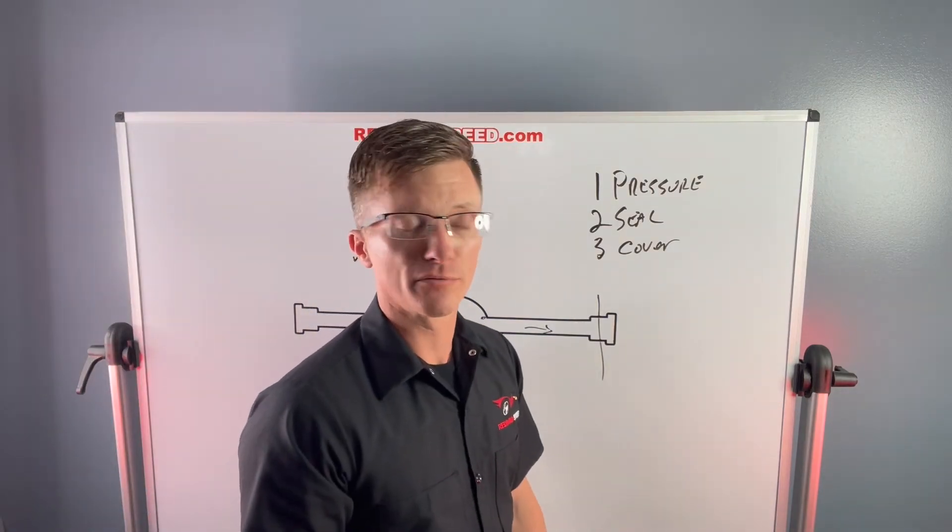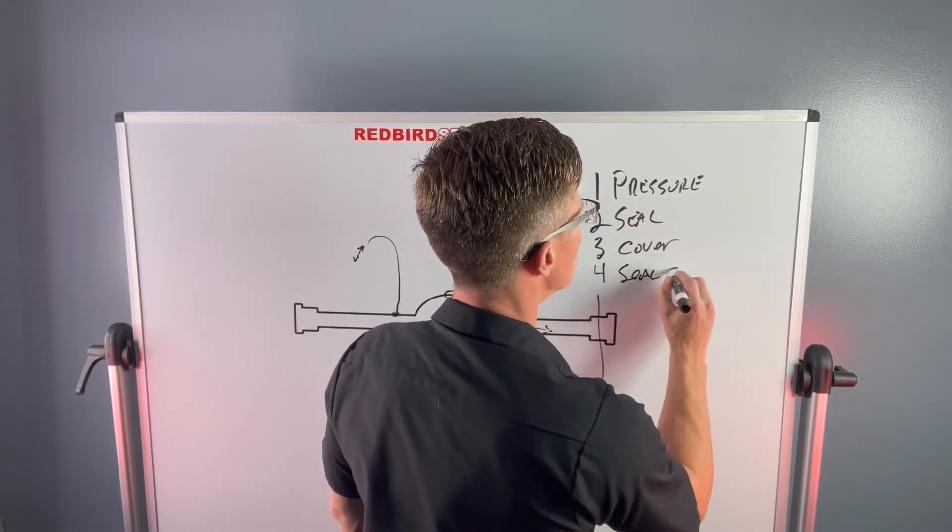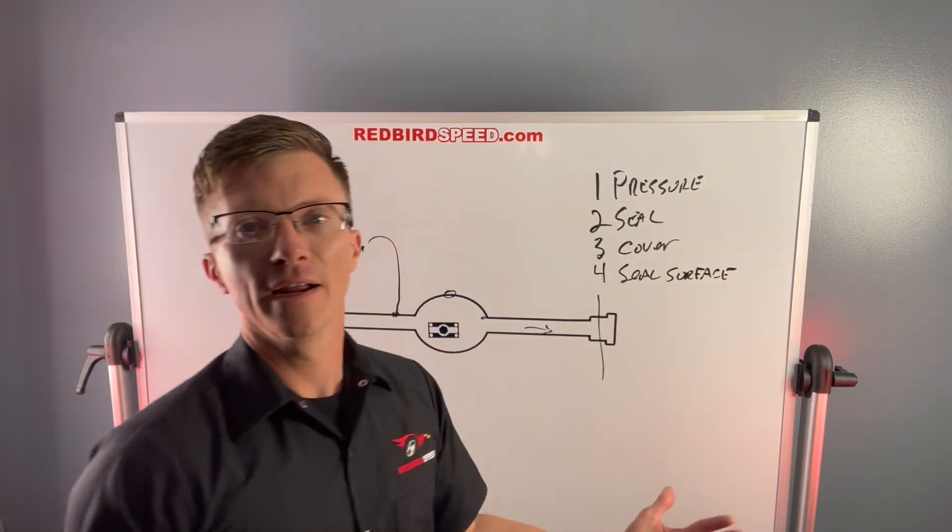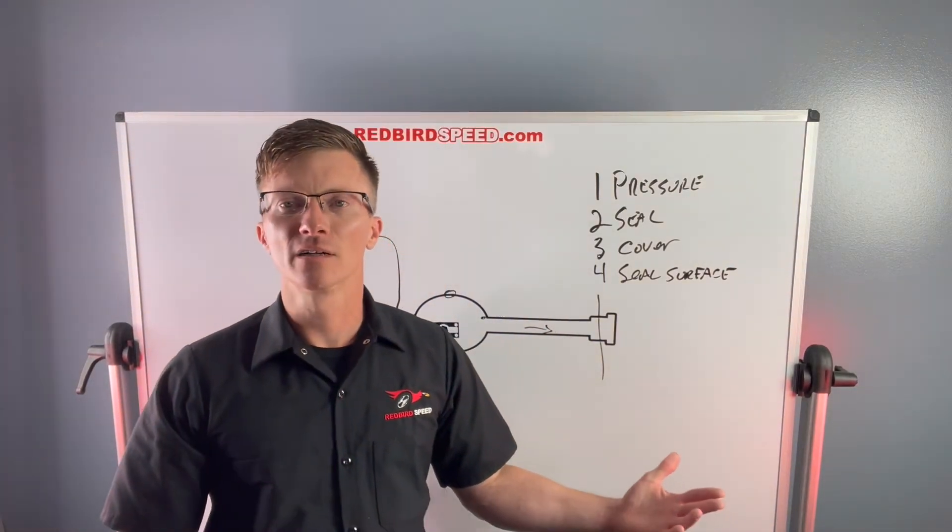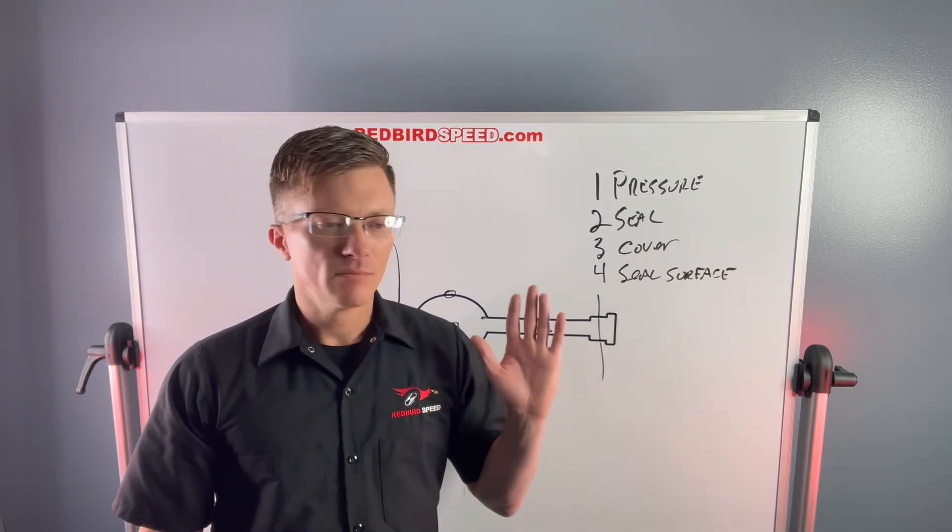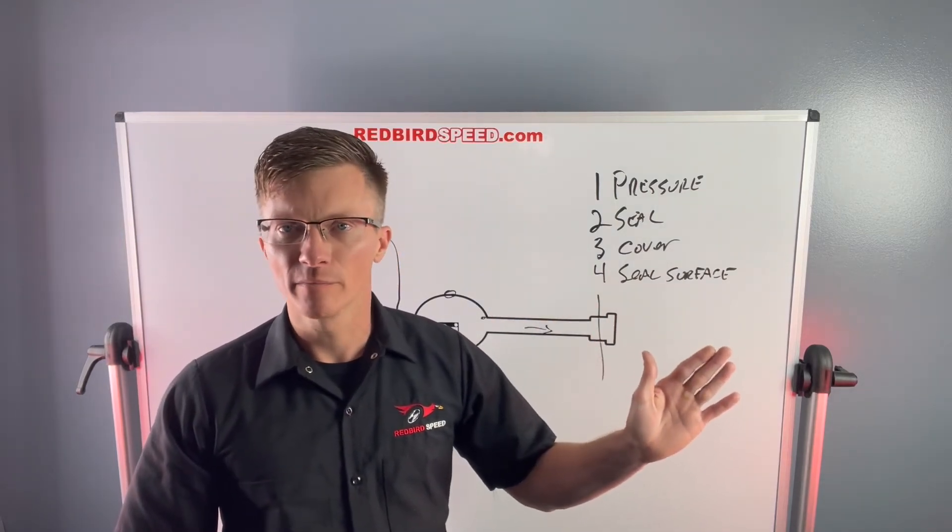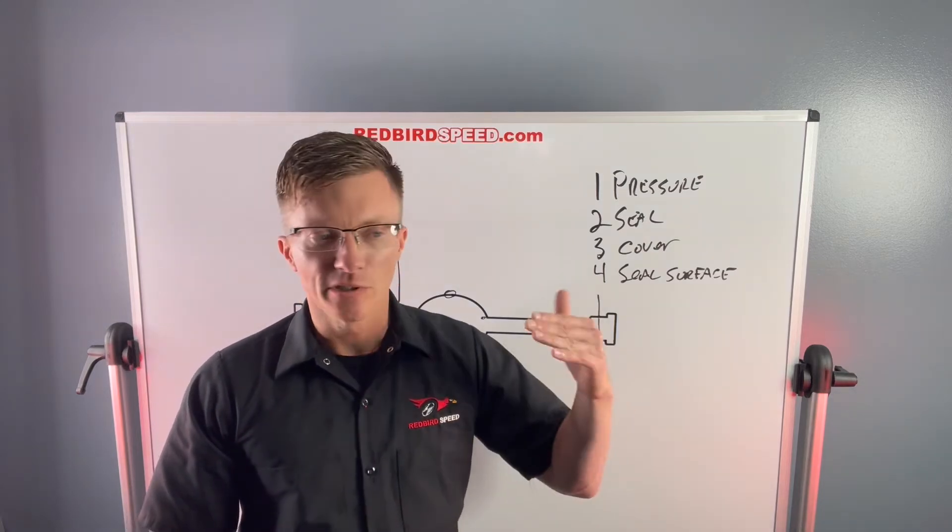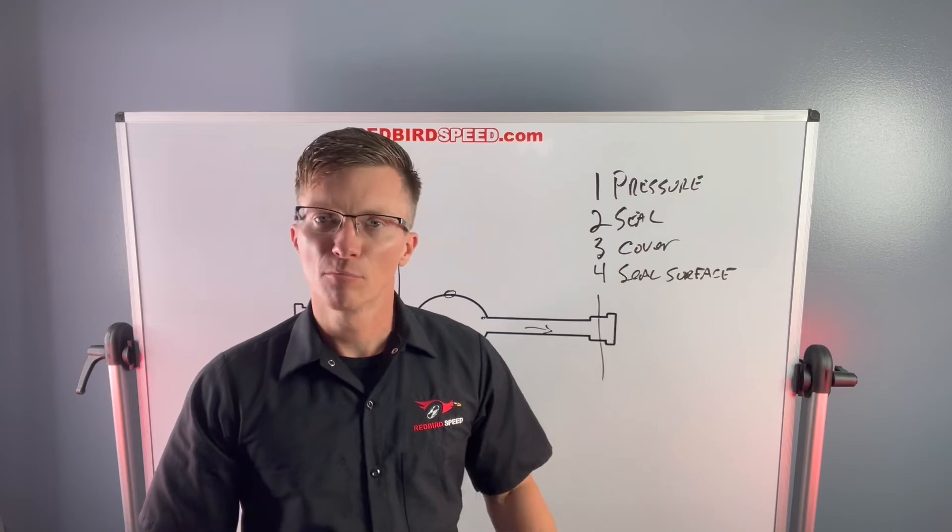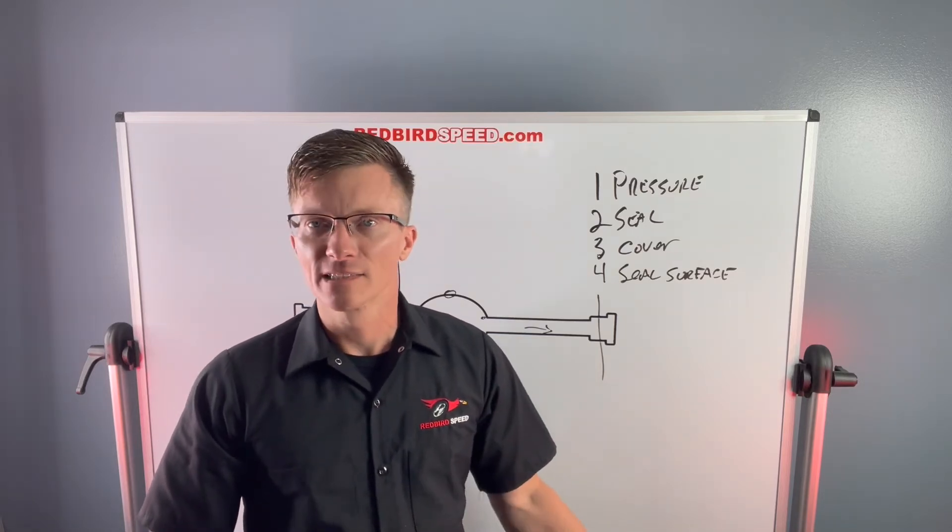Number four, seal surface. Say you got an S10 with 150,000 miles on it and this axle is just worn down. That axle has been riding on that seal surface for 150,000 miles or something and the axle needs replaced. If you see a groove there, you see some pits there, you see problems in that seal surface, probably time to replace the axle because it's never going to seal properly. So that's kind of an easy one.